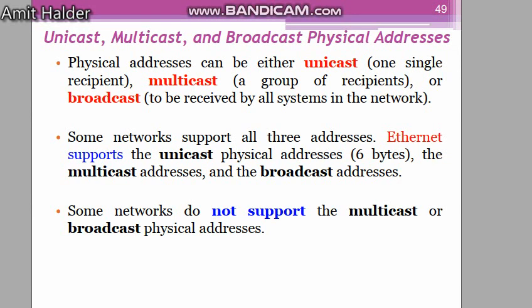In physical addressing, there are three basic modes: unicast, multicast, and broadcast. Unicast means one single recipient — for example, pairing via Bluetooth with one device. Multicast means a group of recipients — for example, connecting every computer in an office. Broadcast means all devices on a single link share the same access. Ethernet supports unicast, multicast, and broadcast physical addresses, though some networks do not support multicast or broadcast.